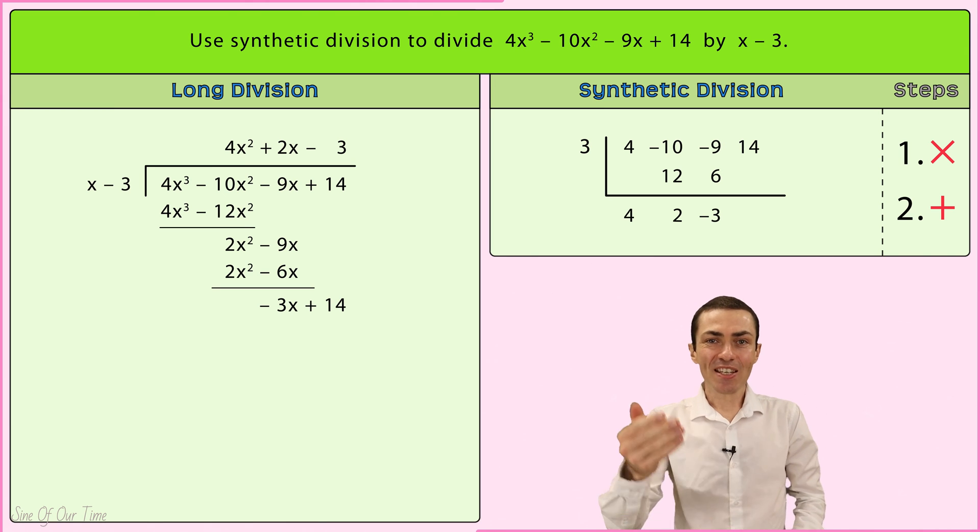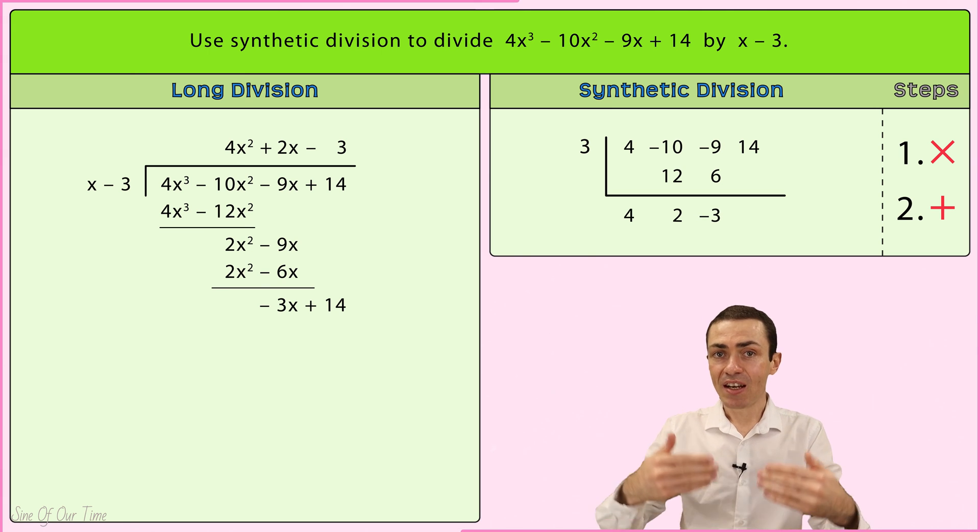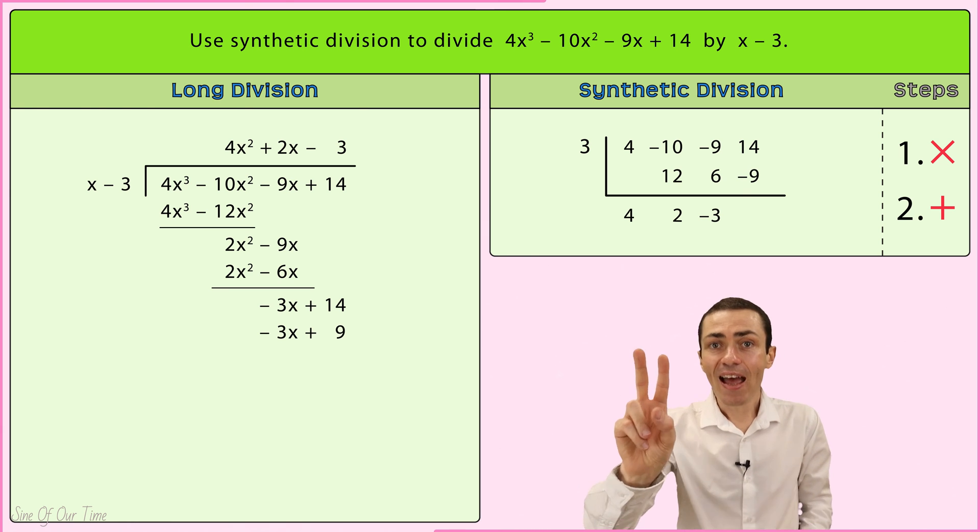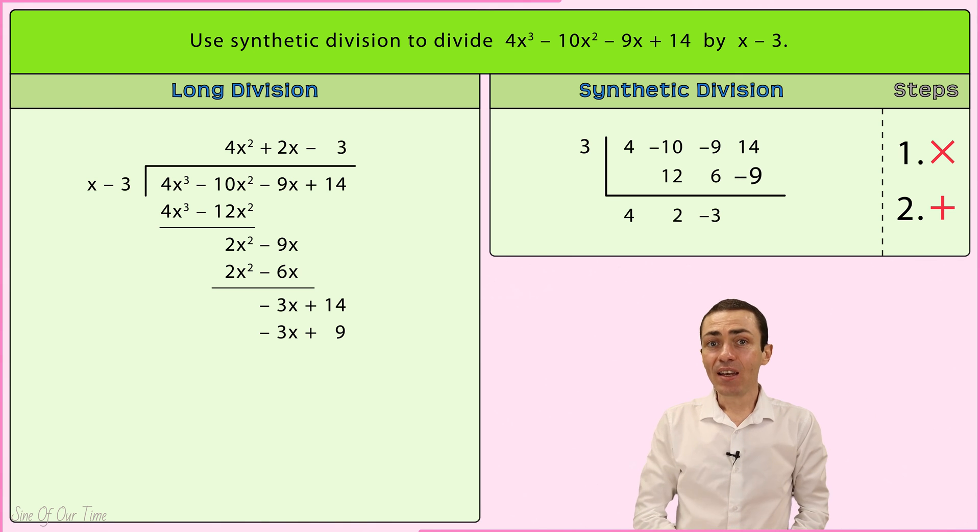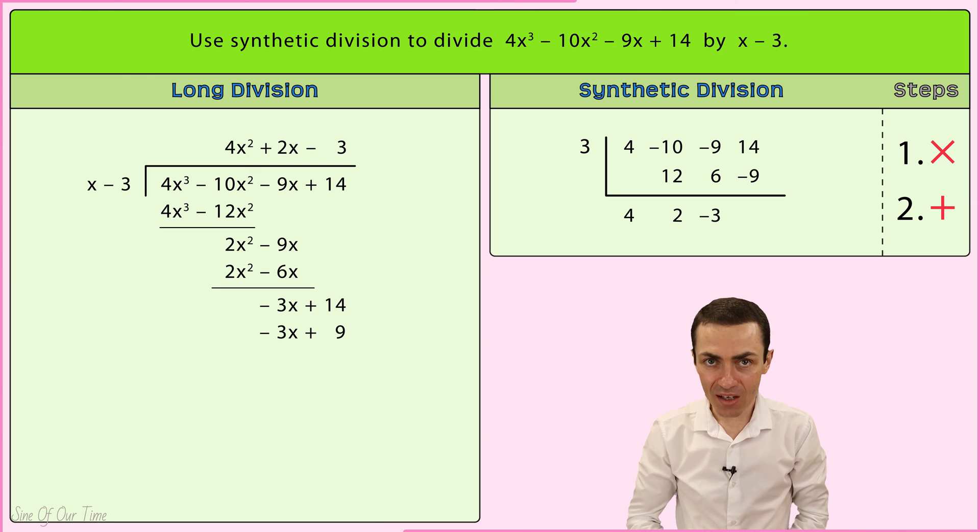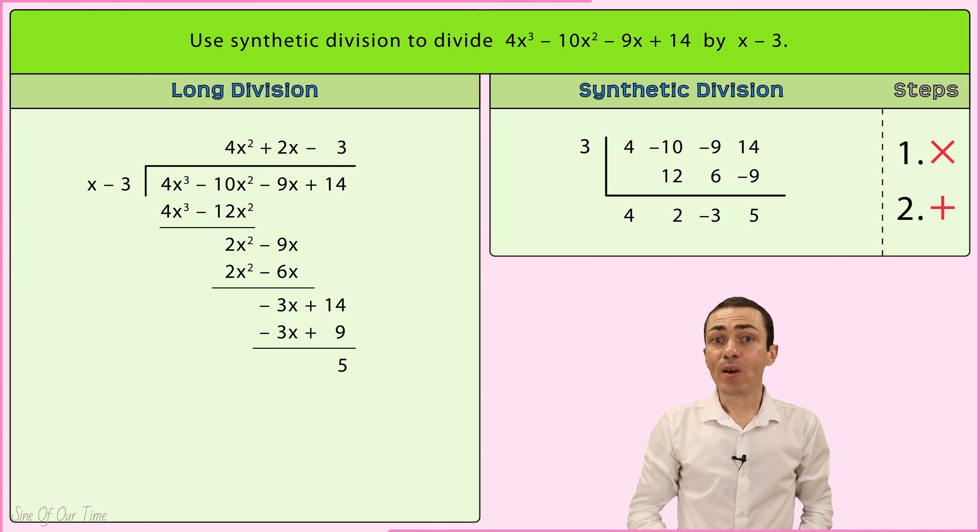We take that 3 and we multiply it by negative 3, which gives us negative 9, which we write in the next column beneath 14. And then step 2, add. We take that 14 and we add negative 9 in order to give us 5, which we write below the synthetic division symbol. Now that each of the columns is filled, we have completed the synthetic division process.